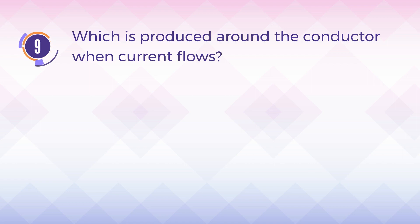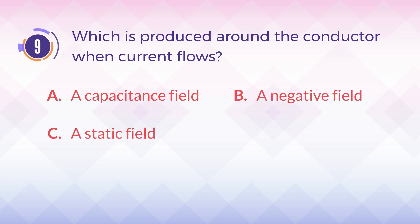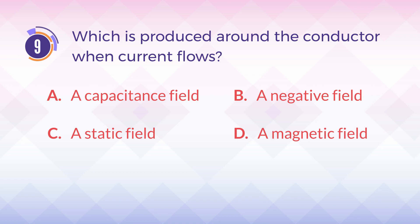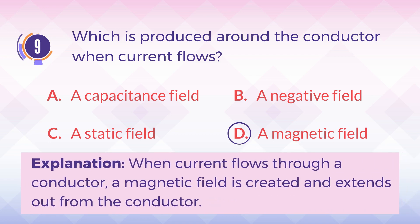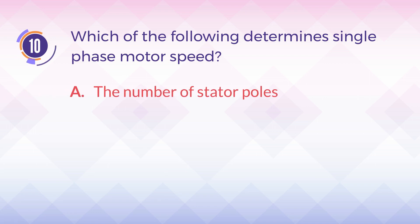Number nine: which is produced around the conductor when current flows? A) a capacitance field, B) a negative field, C) a static field, D) a magnetic field. The correct answer is D) a magnetic field. Explanation: when current flows through a conductor, a magnetic field is created and extends out from the conductor.